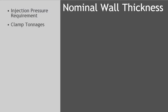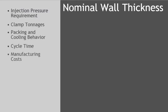Nominal wall thickness is related to most of the topics that we've covered in the previous lessons, including overall injection pressure requirement, clamp tonnages, packing and cooling behaviors, cycle time, and manufacturing costs. Shrinkage, warpage, and molded-in stress can also be added to the list.